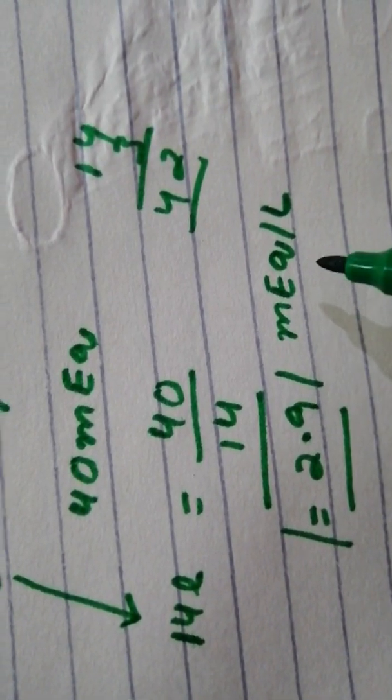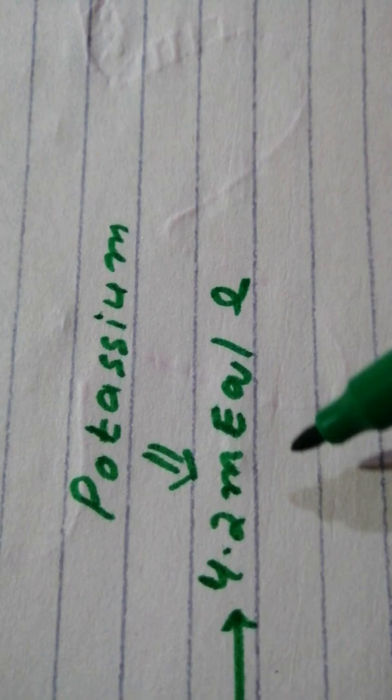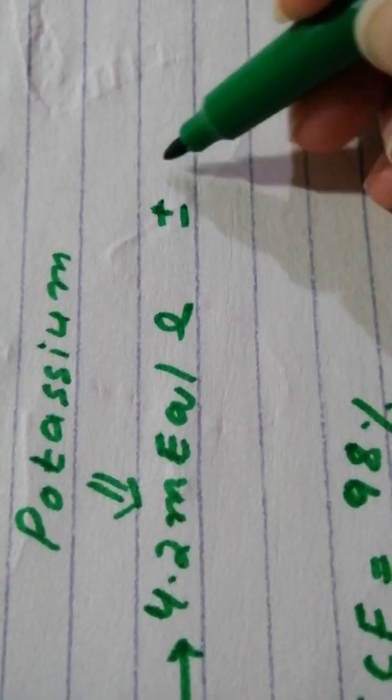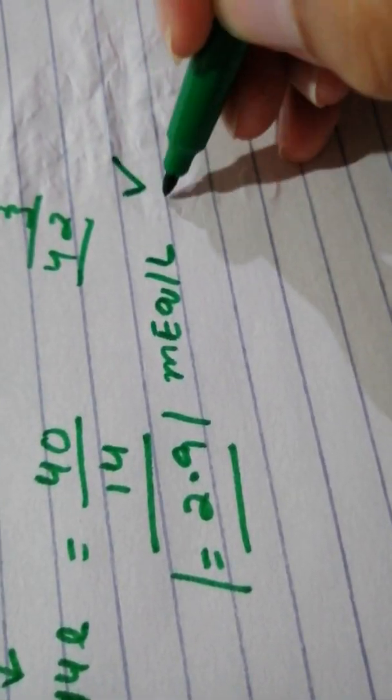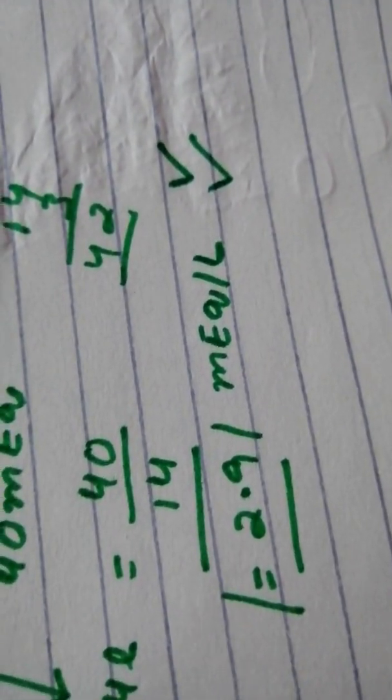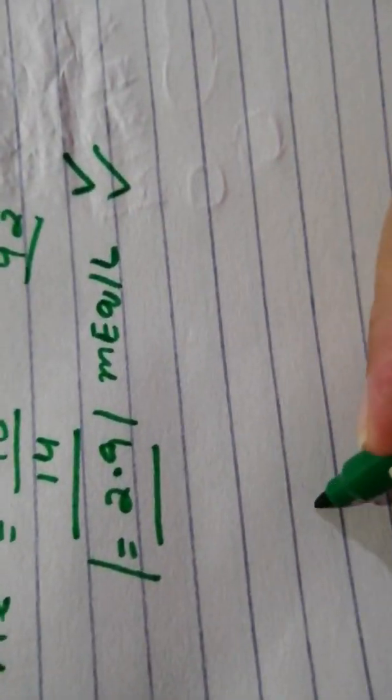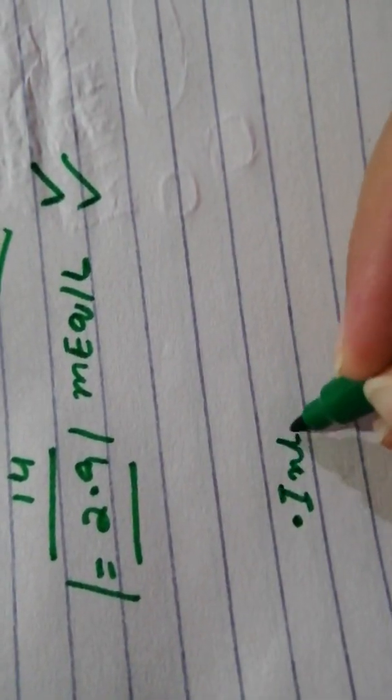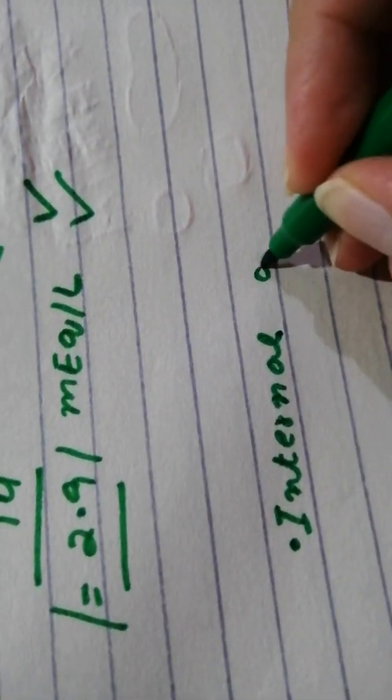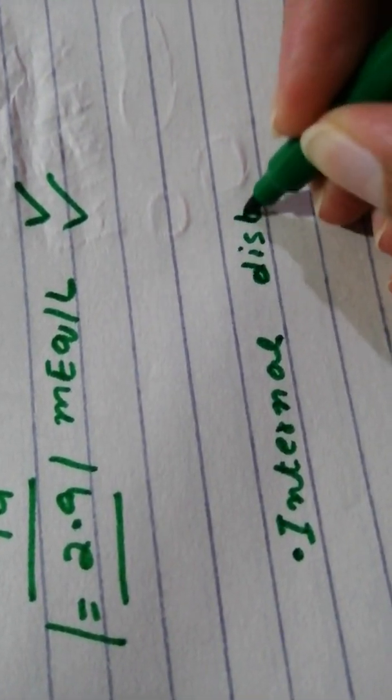This would alone cause an increase of 2.9 milliequivalents per liter, and that's a bad thing because normally you do not want the potassium concentration varying by more than plus or minus 0.3, as this much change can be fatal and lead to arrhythmias and even cardiac arrest.